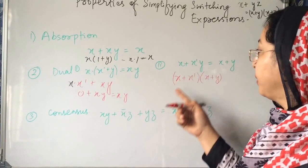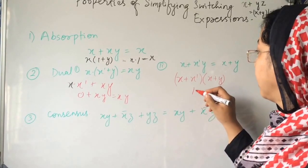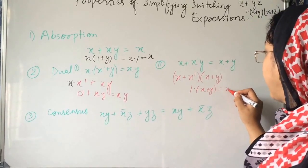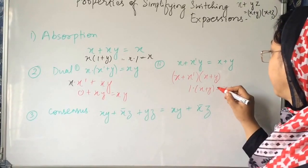x plus x dash, x plus y. And x plus x dash will become 1. x dot x dash is 0, but x plus x dash is 1. So what we can write here? 1 dot x plus y. It will become x plus y.